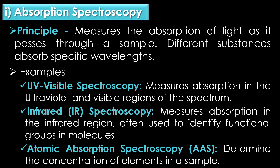The first type is absorption spectroscopy. Absorption spectroscopy measures the absorption of light as it passes through a sample; different substances absorb different wavelengths. Examples include UV-visible spectroscopy, which measures absorption in the ultraviolet and visible region; infrared or IR spectroscopy, used to identify functional groups in molecules; and atomic absorption spectroscopy, used to determine the concentration of elements in a sample.